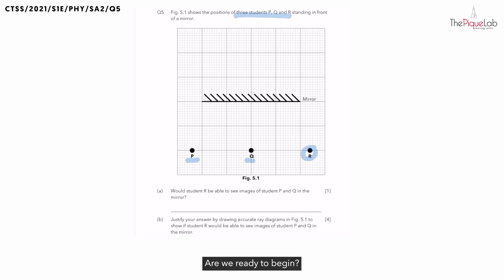Are we ready to begin? Let's start by recapping the two important laws for reflection. The first law: the incident ray, normal and reflected ray must lie on the same plane at the point of incidence. What is the second law? The angle of incidence must be equal to the angle of reflection.